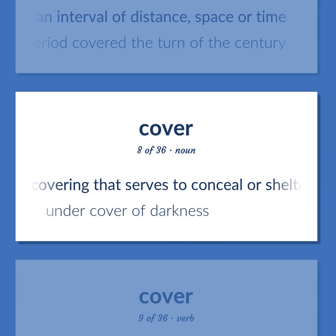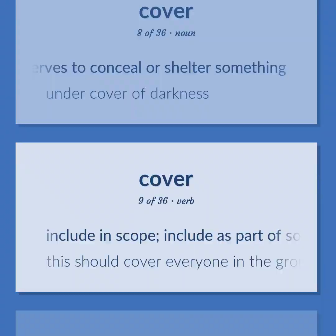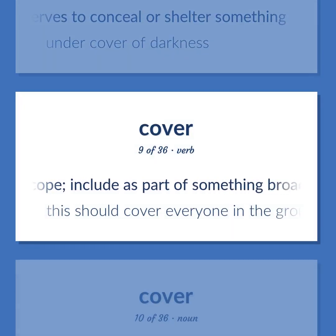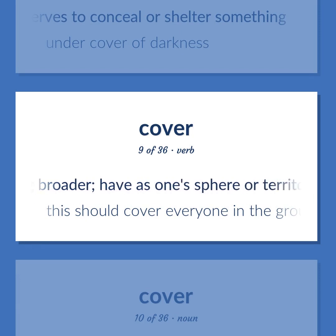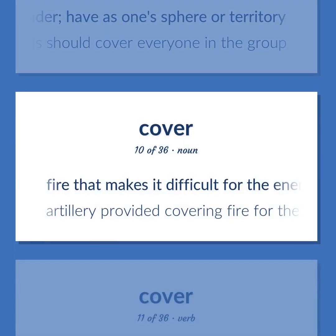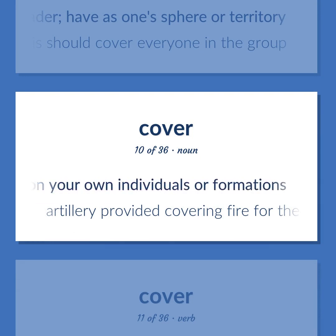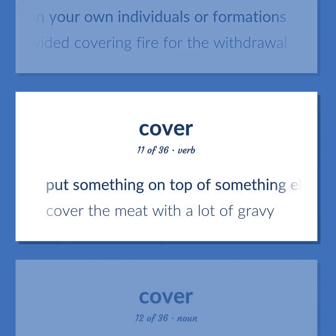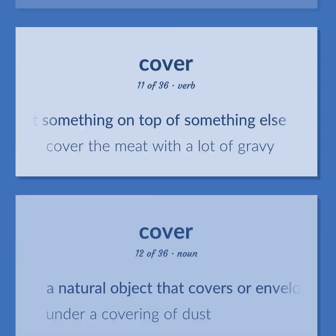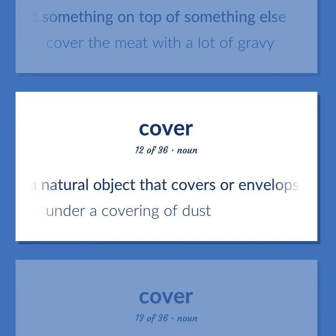A covering that serves to conceal or shelter something. Under cover of darkness. Include in scope; include as part of something broader; have as one sphere or territory. This should cover everyone in the group. Fire that makes it difficult for the enemy to fire on your own individuals or formations. Artillery provided covering fire for the withdrawal. Put something on top of something else. Cover the meat with a lot of gravy. A natural object that covers or envelops. Under a covering of dust.